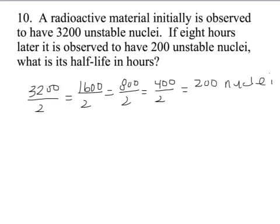And so in looking at this, here we've got one, two, three, four half-lives that have passed. And so it took four half-lives to go from 3,200 nuclei down to 200.